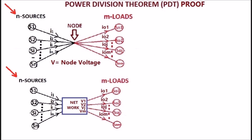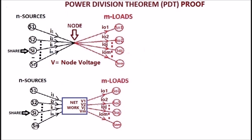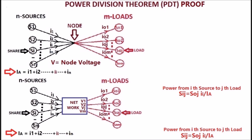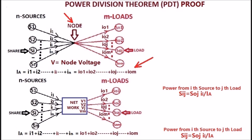See the display. N sources are delivering power to the m-loads through a node or through a network at a particular operating condition. As per the theorem, the share of the i-th source to the j-th load — i.e., power from the i-th source to the j-th load — is shown in the display as Sij equal to the j-th load power SOJ multiplied with the ratio of i-th source current i-i to the total source current. As per Kirchhoff's current law, total source current entering the node or network is equal to total load current leaving from the node or network.